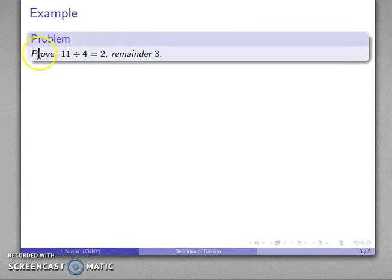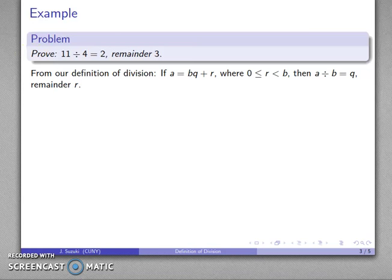So let's take a look at a problem. Prove 11 divided by 4 equals 2 with remainder 3. Because this is a prove statement, we have to go back to the definition. So we'll go ahead and quote that.